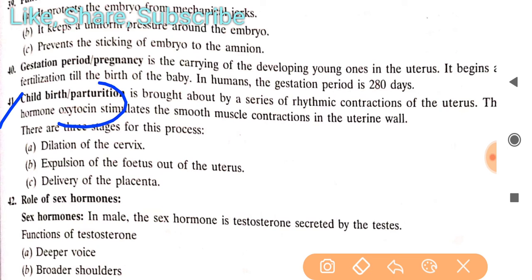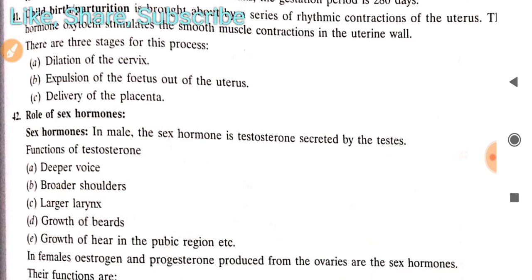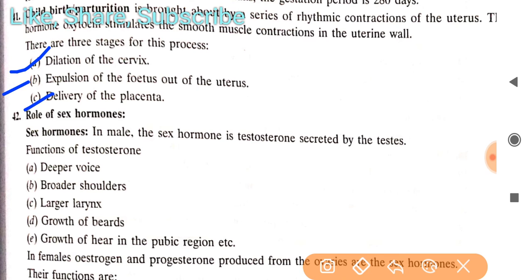Childbirth or parturition is brought about by a series of rhythmic contractions of the uterus. The hormone oxytocin — which we also know as antidiuretic hormone (ADH) — stimulates smooth muscle contractions in the uterine wall. There are three stages: first, dilation of the cervix; second, expulsion of the fetus out of the uterus; and third, delivery of the placenta.